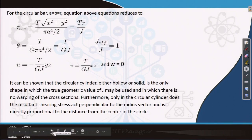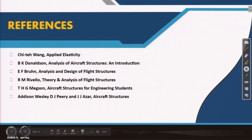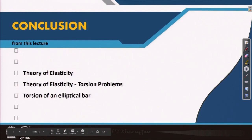With that, we come to the end of the torsion problem of the elliptical section. These are the standard references for this topic. What we have learned today: torsion of an elliptical section, insight into the warping phenomenon, and solutions conforming to the circular section. Thank you for attending the lecture. We will see you later.